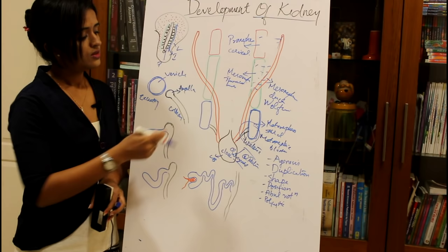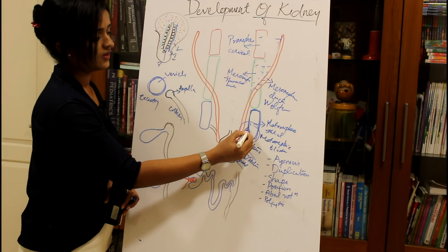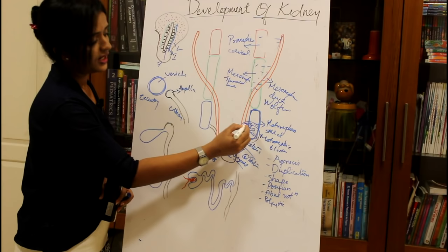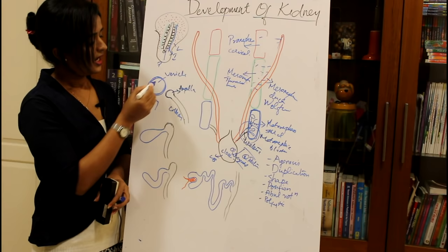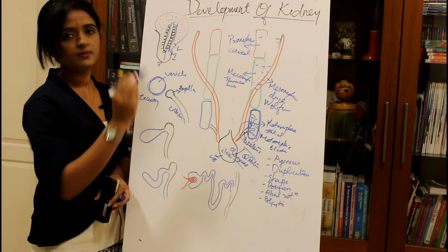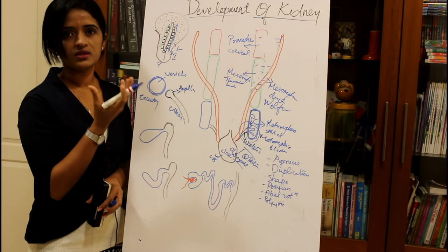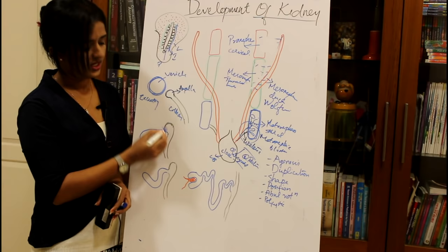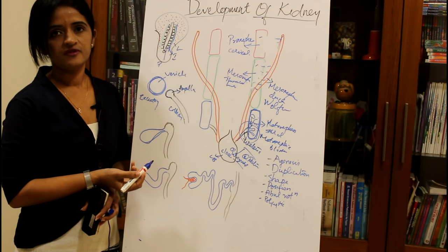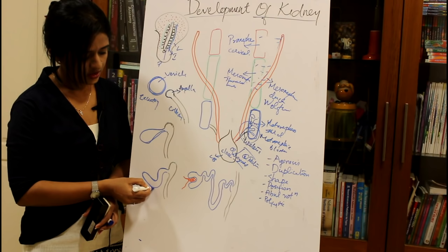As the ureteric bud enters the metanephric blastema, it divides into major and minor calices, and again redivides so that the distal end becomes the dilated ampulla. Nearer to the ampulla we have the metanephric vesicle. Initially the vesicle is spherical, then becomes pear-shaped, and this pear-shaped vesicle joins with the dilated end of the ureteric bud, the ampulla. It then transforms into an S-shaped tube.